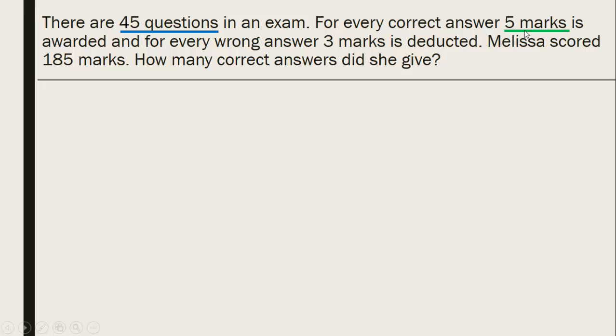Every correct answer receives 5 marks. So we know that if the student gets all the 45 questions correctly, then the total marks obtained will be 45 times 5. And there is another drawback here. For every wrong answer, 3 marks is deducted. So Melissa scored 185 marks. This is the total marks she has scored. And how many correct answers did she give? So we will use a table method basically to understand what's happening.